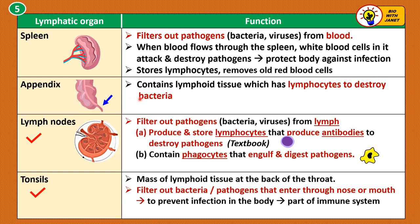Lymph nodes filter out pathogens or bacteria and viruses from lymph. They produce and store lymphocytes that produce antibodies to destroy pathogens, and they contain phagocytes that engulf and digest pathogens. Tonsils are masses of lymphoid tissue found at the back of the throat and they filter out bacteria or pathogens that enter through the nose in the air, or bacteria from food, to prevent infection in the body. So tonsils are part of the immune system too.